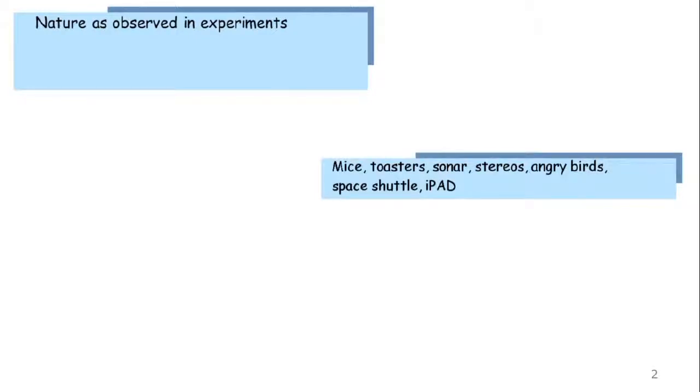So let's put nature and what is on the left-hand side. And on the right-hand side, let's put down some of the kind of things that we may want to build that will help humanity. Computer mice are an example. Cool devices like your iPad or your Razer phone are useful devices. Space shuttle, stereo systems, sonar, even Angry Birds.